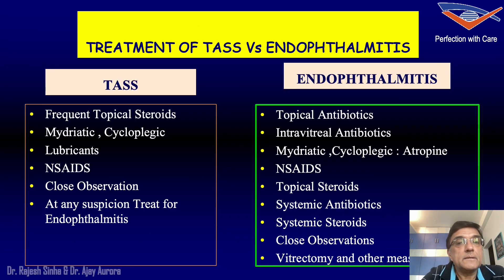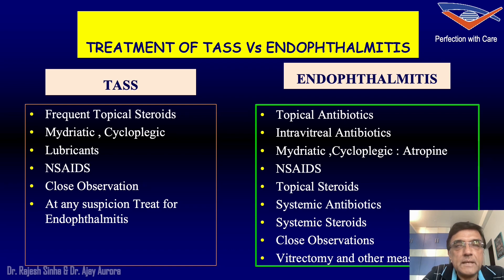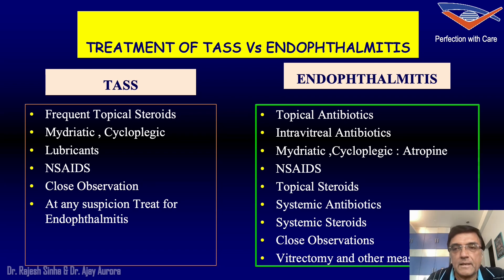TAS needs to be treated with intensive topical steroids, mydriatic cycloplegics, lubricants, non-steroidal anti-inflammatories, and close observation of the patient. At any suspicion, you must treat the patient for endophthalmitis. For endophthalmitis, the standard treatment is topical antibiotics, intravitreal antibiotics which are very important, atropine, NSAIDs, topical steroids, systemic antibiotics, systemic steroids, and vitrectomy whenever indicated.